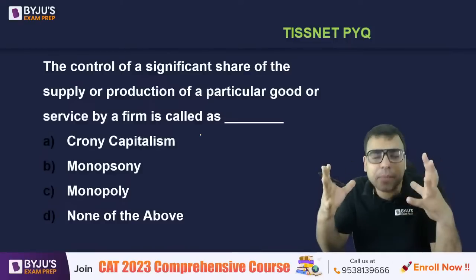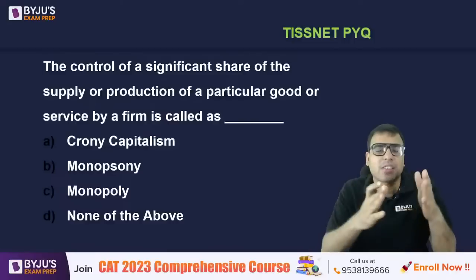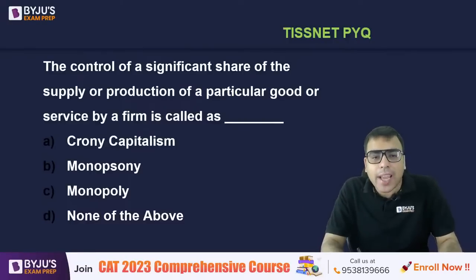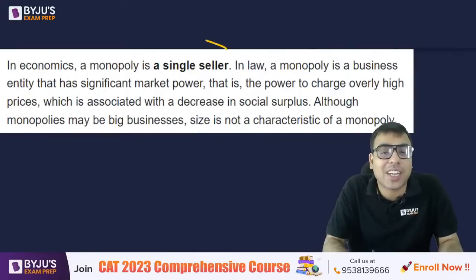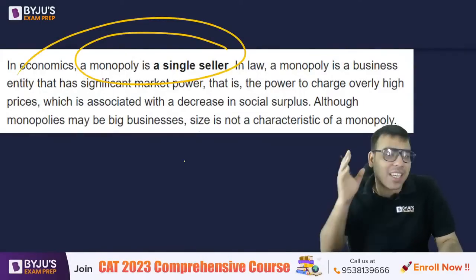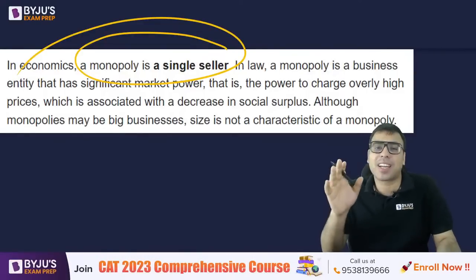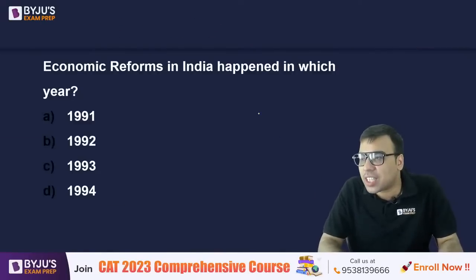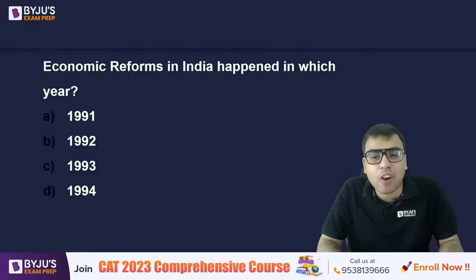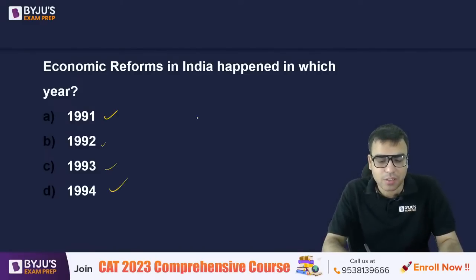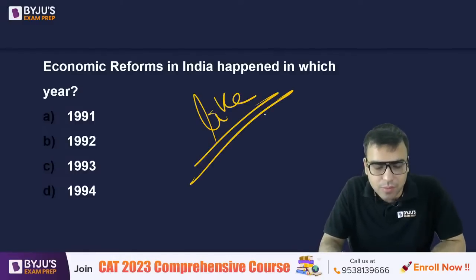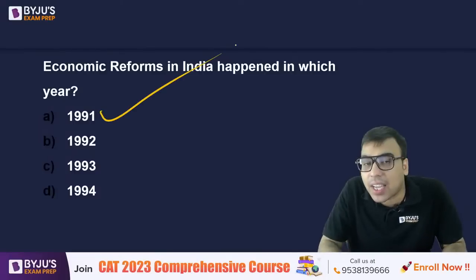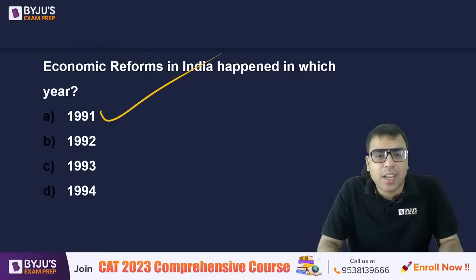The primary sector has the highest employment share, then tertiary, then secondary. Regarding monopoly: if someone is ensuring only their market exists, that's called a monopoly. C is the right answer. Next question: economic reforms in India happened in which year — 1991, 1992, 1993, or 1994? The right answer is 1991 — A is correct.